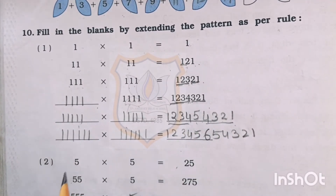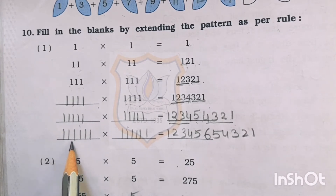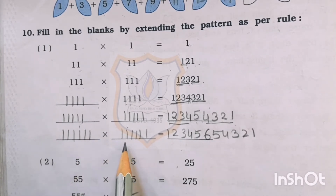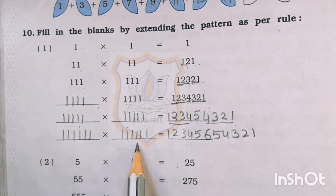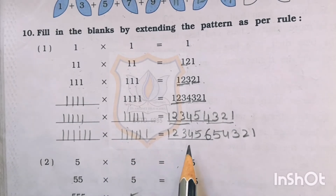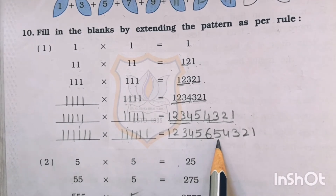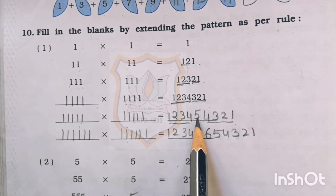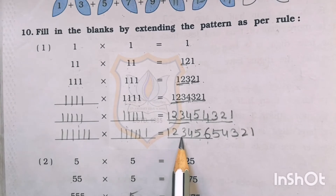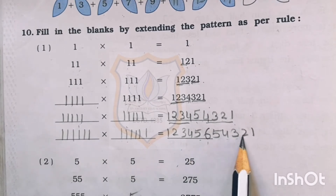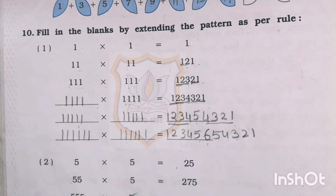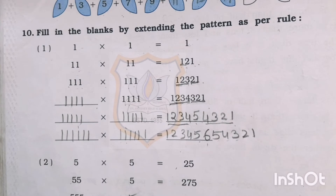Now 6 times 1 we will use: 1,111111 multiplied by 1,111111. The answer: 1, 2, 3, 4, 5 we will write first as it is, then in reverse order 5, 4, 3, 2, 1, and in place of 5 we will write 6. So the answer is 1, 2, 3, 4, 5, 6, 5, 4, 3, 2, 1. Students, in the same way we have to follow the rule and extend the pattern. The second and third part of question number 10 you have to do by yourself.